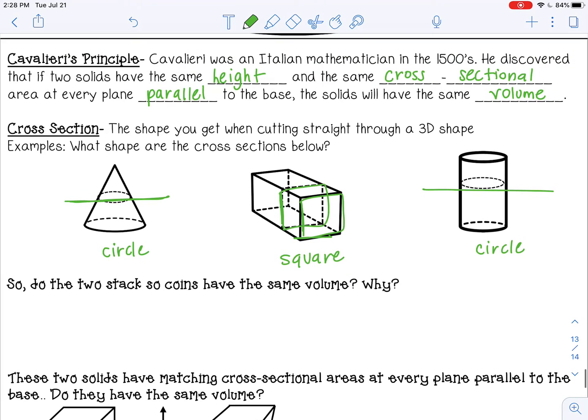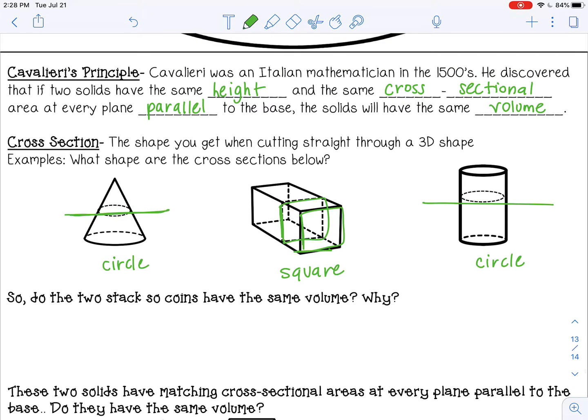Okay, so let's go back to Cavalieri's principle. So if two shapes have the same height and they have the same cross-sectional area. So basically if we took a slice off of each, would they have the same area?